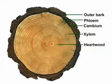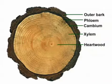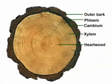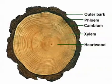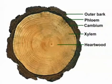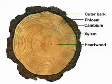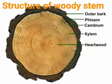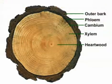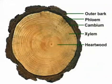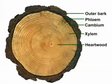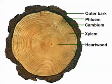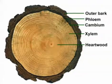Sapwood transports sap throughout the plant, that is water and minerals. Heartwood, which is darker in color and present in the center, is a storage of sugar, dyes, resins, and oils.